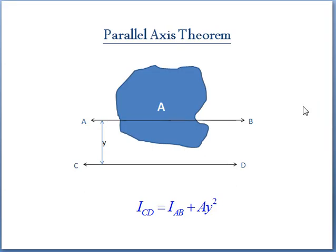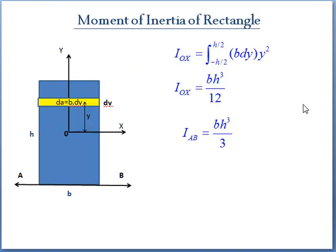Now, we will see a simple example to calculate the moment of inertia of a rectangular plate having width B and height H. To calculate the moment of inertia about X-axis, let us consider a small strip of elemental area B into DY which is at a distance of y.